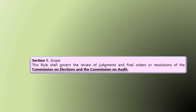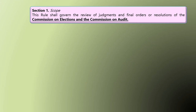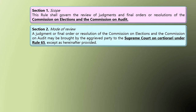Let's go now to the Sections. Under Rule 64, there are 9 sections. Section 1 is the Scope — the application of Rule 64 is very limited, only to decisions, judgments, final orders, or resolutions issued by the COMELEC and the COA. Section 2 is the mode of review — Certiorari under Rule 65 — filed exclusively in the Supreme Court.